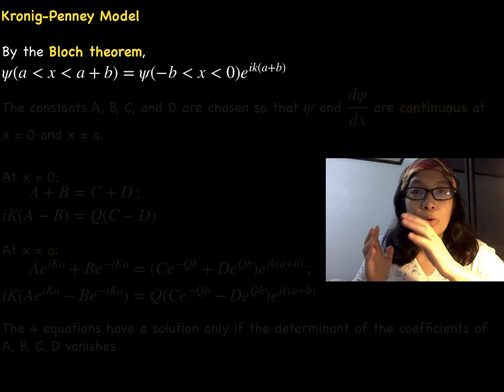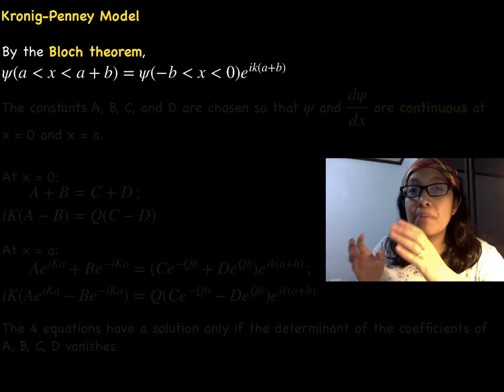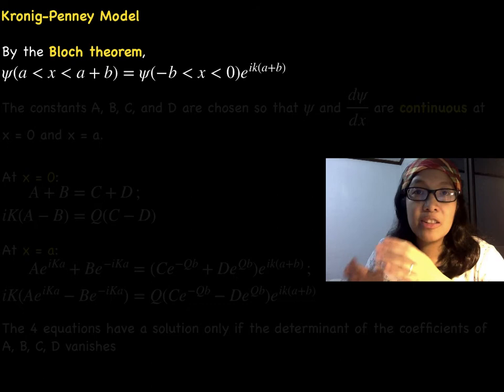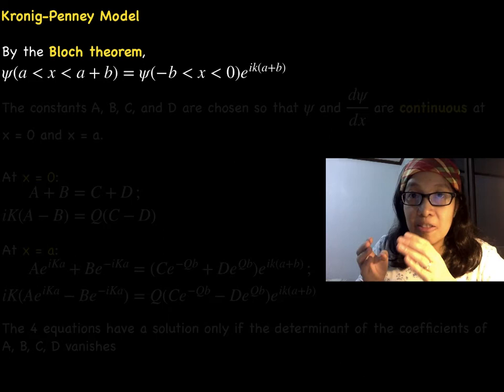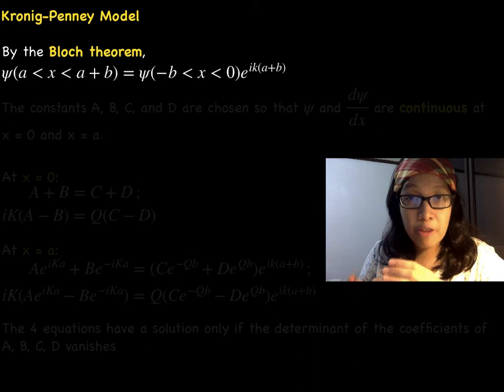We want the solution to have the Bloch form to account for the periodicity of the crystal lattice. By the Bloch theorem, the solution in the region x greater than a but less than a plus b must be related to the solution in the region x greater than negative b but less than zero. The Bloch factor is the exponential function.